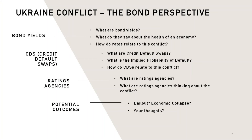In this video, we're going to cover quite a few topics. First, we're going to cover bonds and their yields, and what those yields say about an economy, and how those yields relate to the conflict. Then we're going to cover credit default swaps, what the implied probability of default means, and how credit default swaps relate to the conflict. Then we're going to discuss ratings agencies, what they are, and what they think about the conflict, which might be quite different than what bond investors are thinking. Then finally, we'll discuss some of the potential outcomes of the conflict from an economic sense.